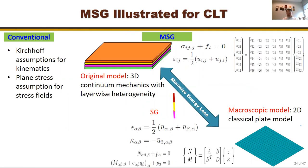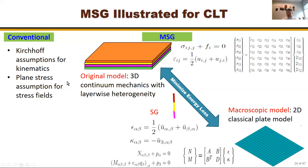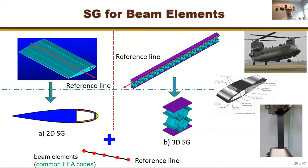For example, Classical Lamination Theory uses Kirchhoff's assumption for kinematics and plane stress for the stress field. Using MSG, you only need: the original model (3D elasticity for each layer), the model you want (surface model), and the structure gene (through-thickness line). Minimize the energy loss and you construct the model without any of the traditional assumptions. You get all six strain components and all six stress components — unlike CLT which gives only in-plane strains and stresses.